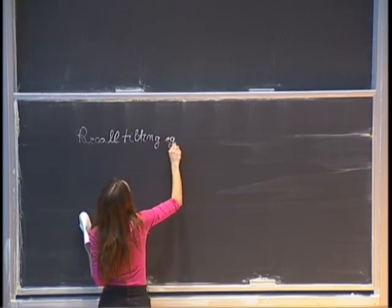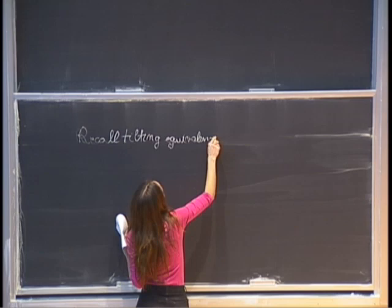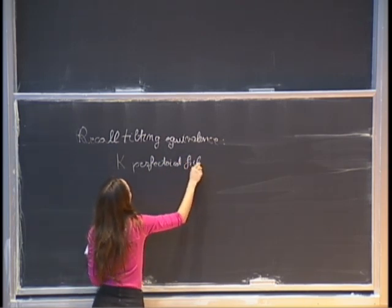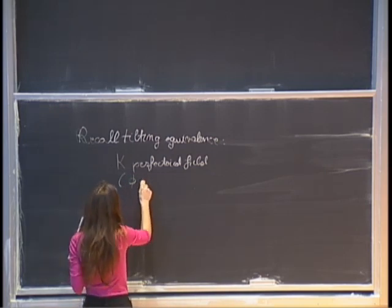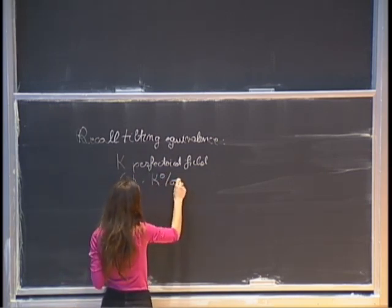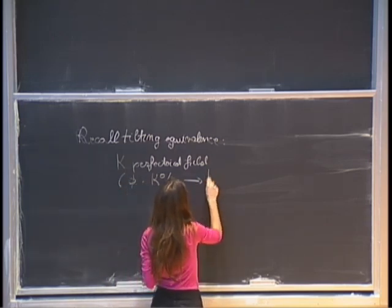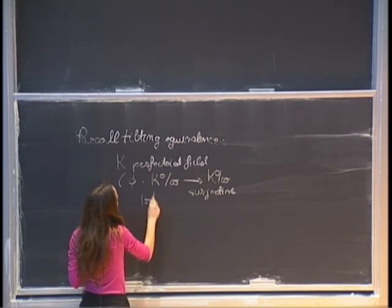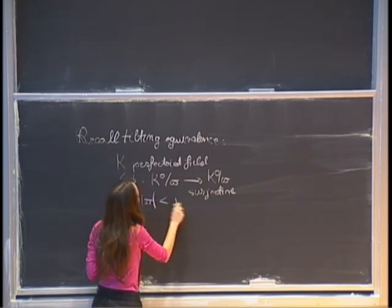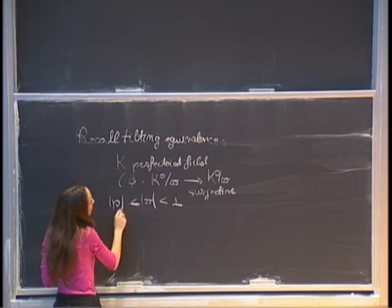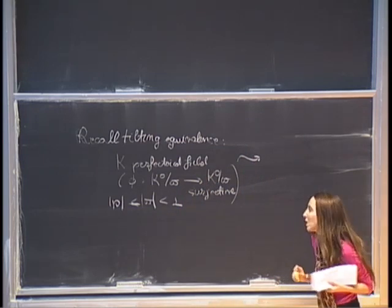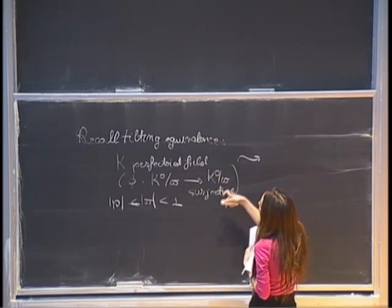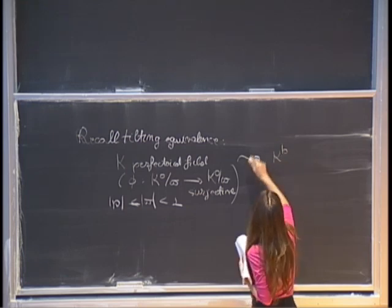The tilting equivalence: start with k a perfectoid field, a complete non-Archimedean field equipped with a non-discrete valuation of rank 1, such that Frobenius from the integral elements mod pi to the integral elements mod pi is surjective. Pi is some quasi-uniformizer in k with absolute value less than 1 and greater than or equal to the absolute value of p, so that Frobenius is a homomorphism.